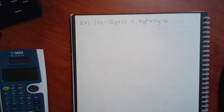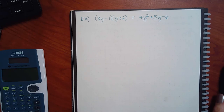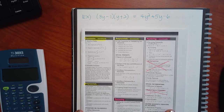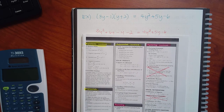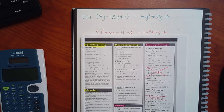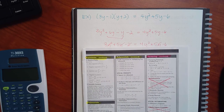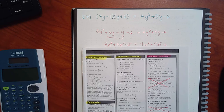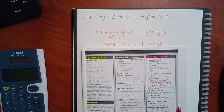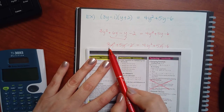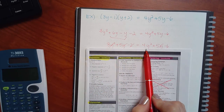Try that one. First step is to FOIL the left side. When you do that, you get 3y² + 6y − y − 2. Then combine the like terms so that you only have one y term, giving you 3y² + 5y − 2. Now it made more sense to move the 3 over there so I would have a positive y².